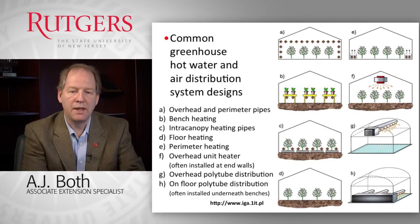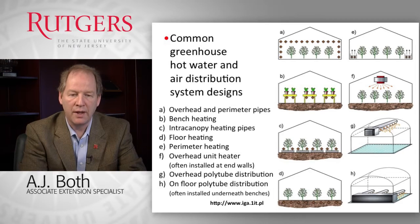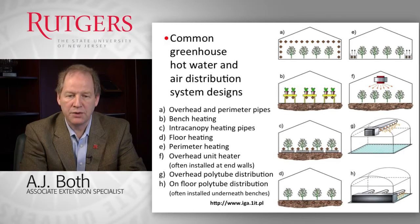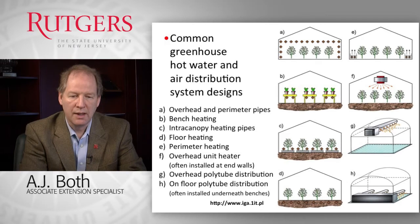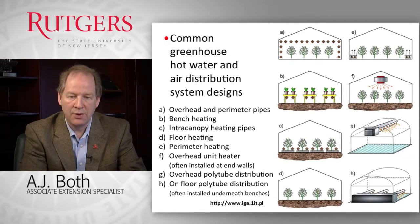In this slide you see several common installation systems for both hot water and hot air heating systems in greenhouses. We can have pipes along the overhead and perimeter of the greenhouse, pipes underneath benches, or pipes in between rows of plants that can also be used for transportation purposes, for example in tomato or pepper crops. We can have floor heating systems where we put heating pipes inside the floor — either a dirt floor or a concrete floor. We can also have only perimeter heating, typically with additional fan capacity to distribute that heat uniformly.